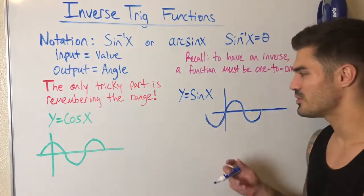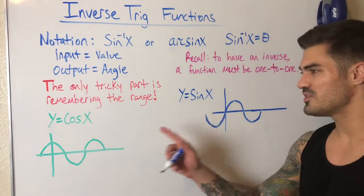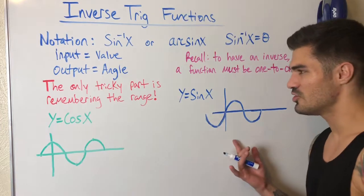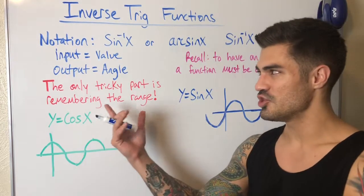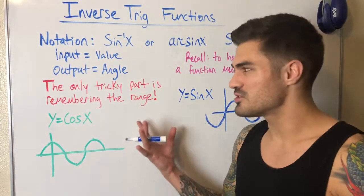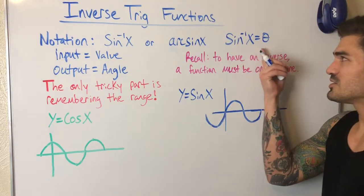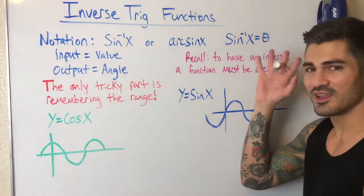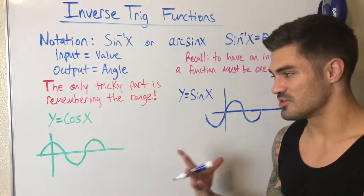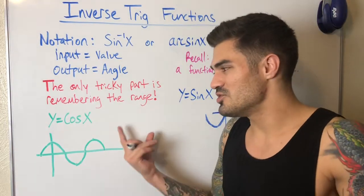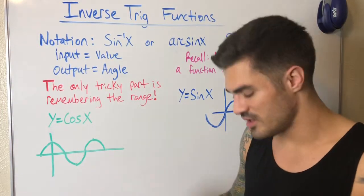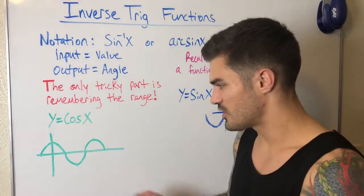What we can do is restrict the domain of these functions. If we restrict the domain to a certain interval, the function becomes one-to-one and we can take the inverse. This restricted domain will restrict the range of our inverse, which is exactly what we want — we want one and only one answer. I think of it as cutting the graph off to make it one-to-one.